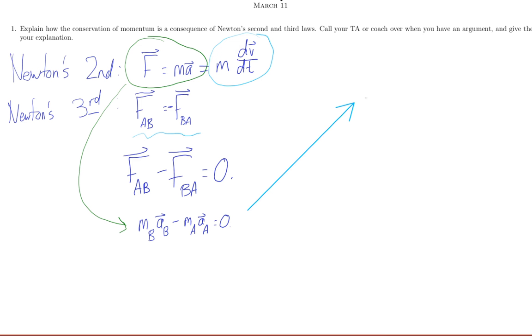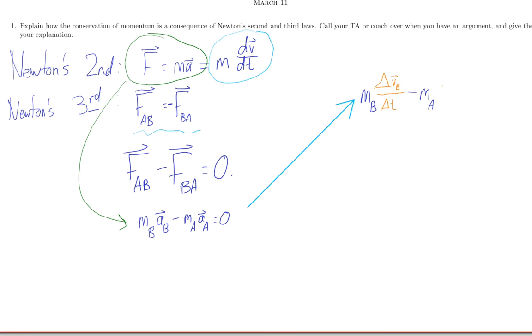That means that MB change in velocity over change in time, minus the same thing for A, delta VA over delta T equals zero.